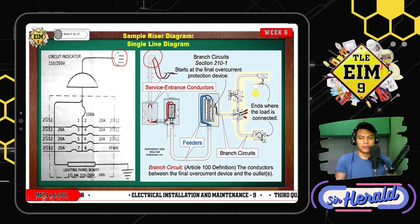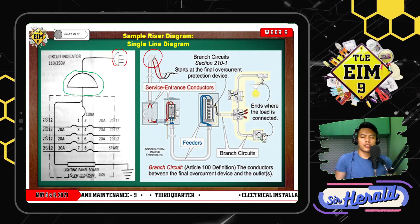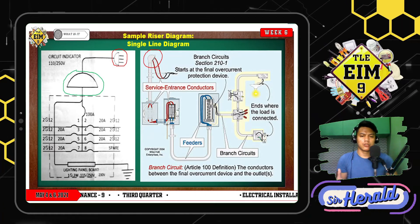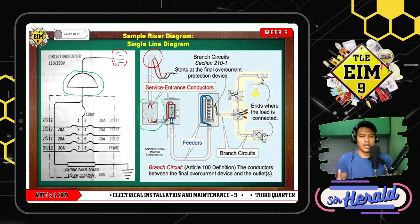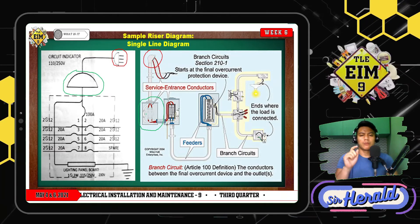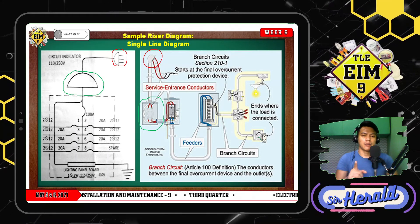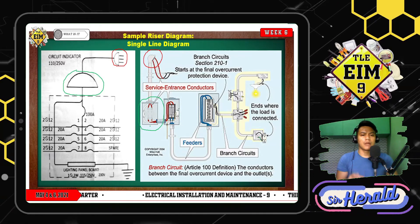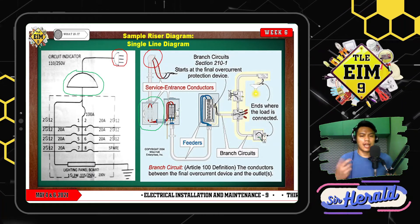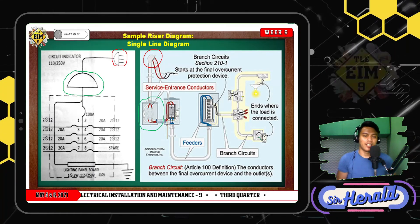The second symbol we identified in the riser diagram is the electrical meter. Where can we see it? This part of the pictorial diagram is the box where the meter is placed — where the meter is inserted. The meter itself is not shown in the image because the one who installs it is the electrical lineman from our electricity service provider. They are the ones who attach it, so the housing just waits there in our house when we apply for electrical connection.